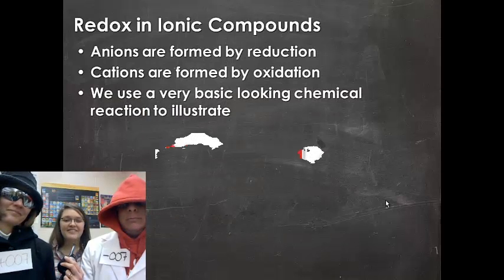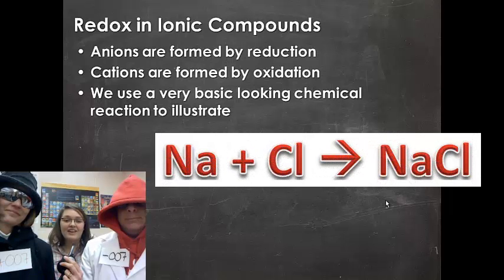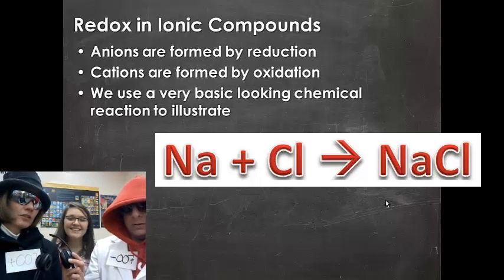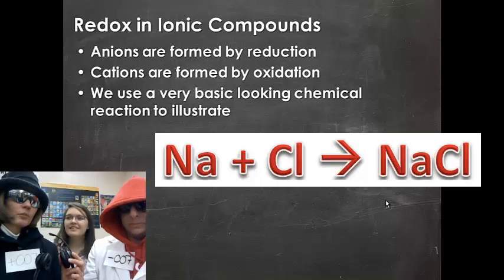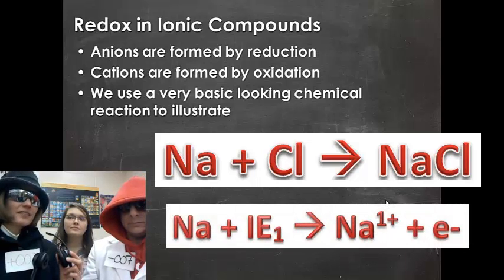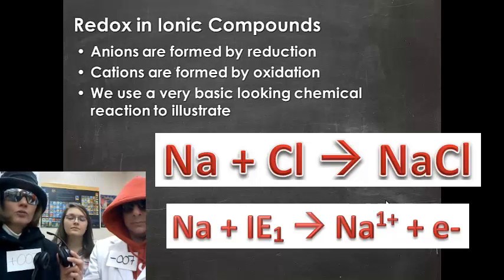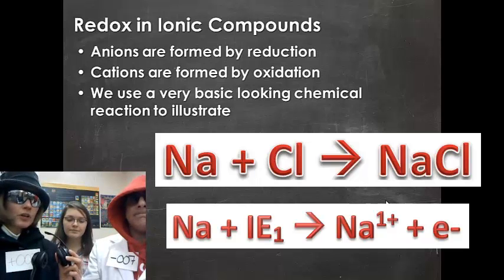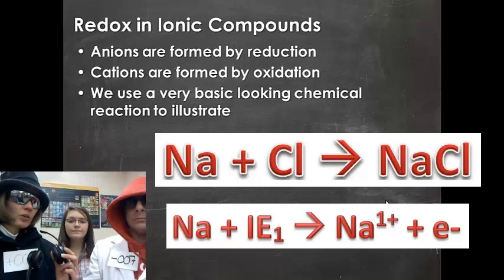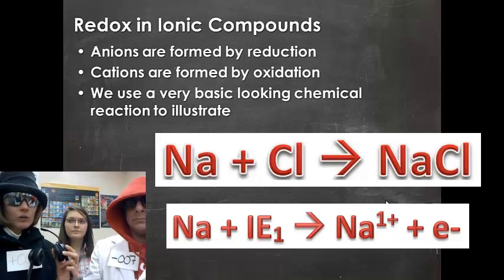We're going to use a very basic looking chemical reaction to help us illustrate this: the reaction between sodium and chlorine to form sodium chloride. When we look at the reaction of sodium with chlorine, sodium is undergoing the process of oxidation. Sodium has just one valence electron in its outer shell. If we add some ionization energy to sodium, we can get it to kick out its one valence electron.